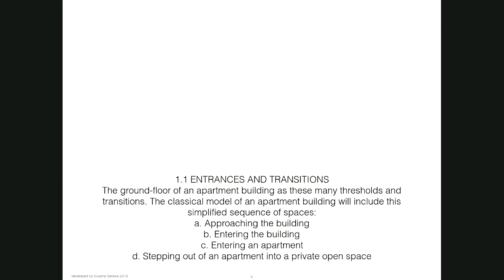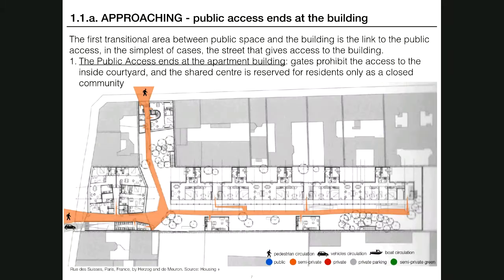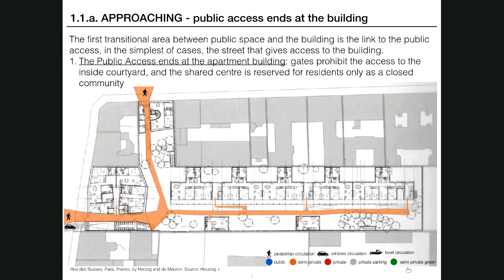Going to point A — approaching the building — there are different ways this approach can be done. In the first case, we are talking about when the public access ends at the building plot. This is Rue des Suisses in Paris. I use the same graphics across all slides, with icons representing public, semi-private, private, private parking, and semi-private green area, to help you navigate this idea. The ground floor interface is all about marking the threshold or mediating between the public realm and the private realm, and you will always see this color code to understand how horizontally and vertically this mediation takes place.